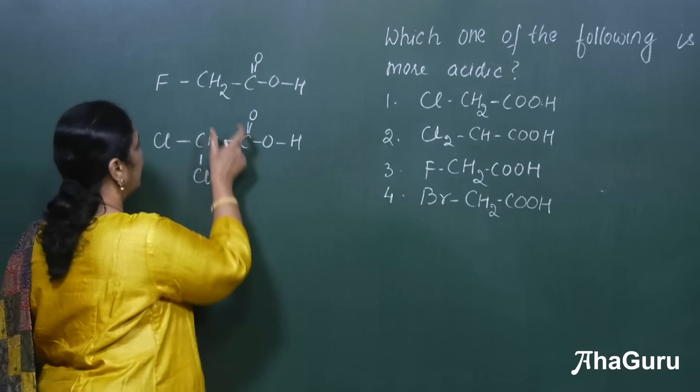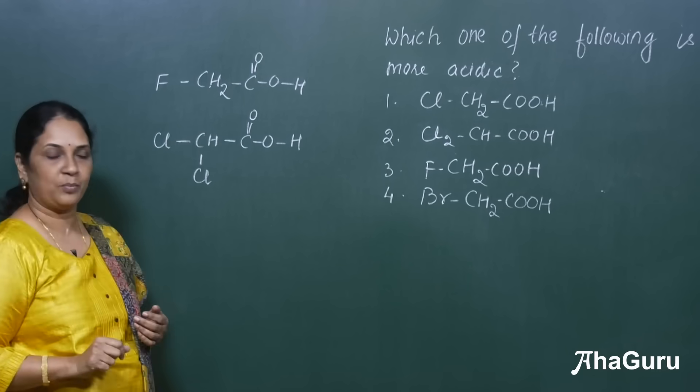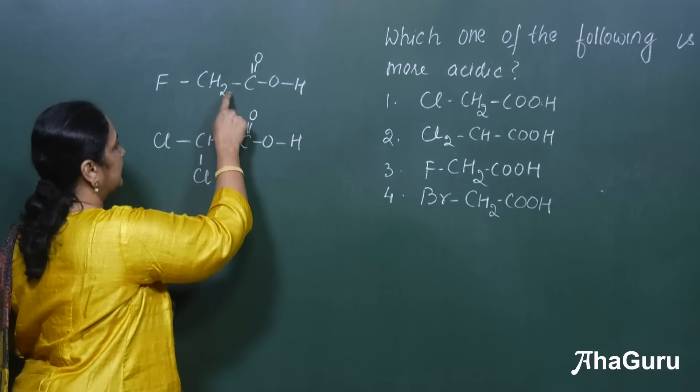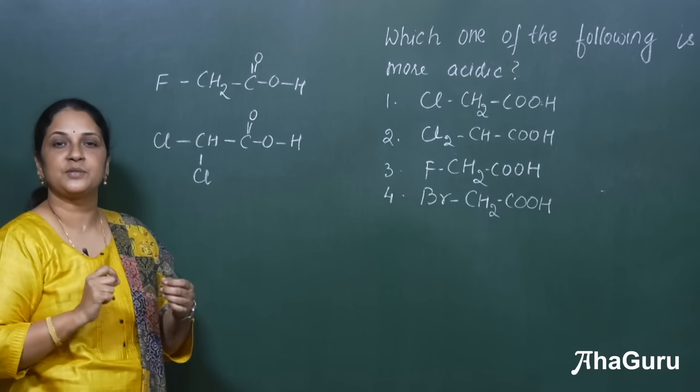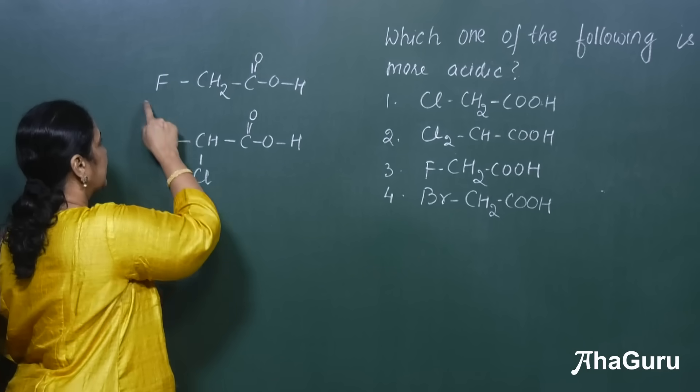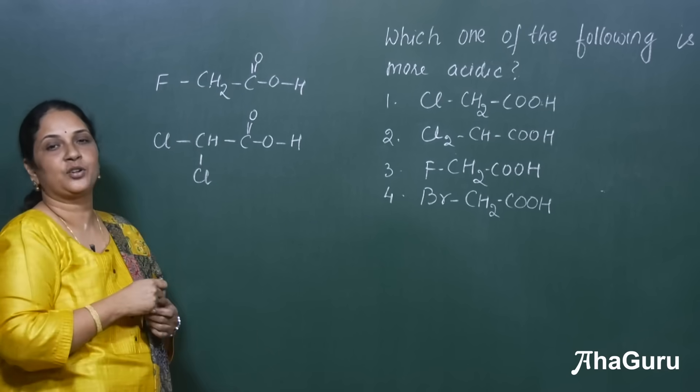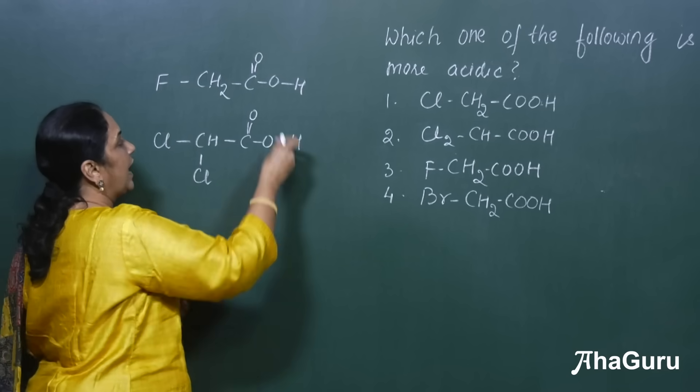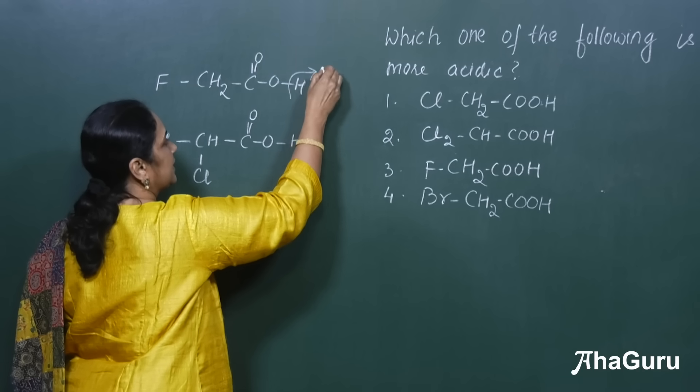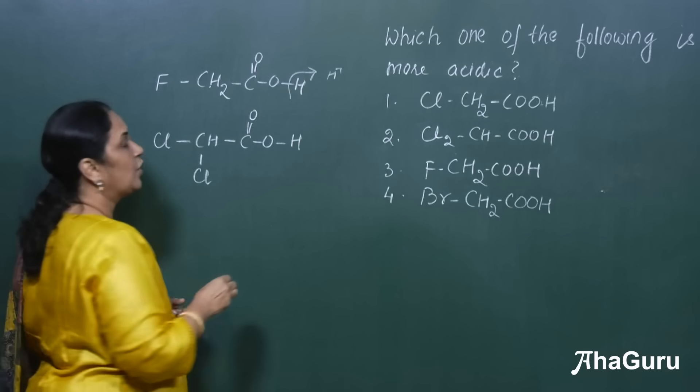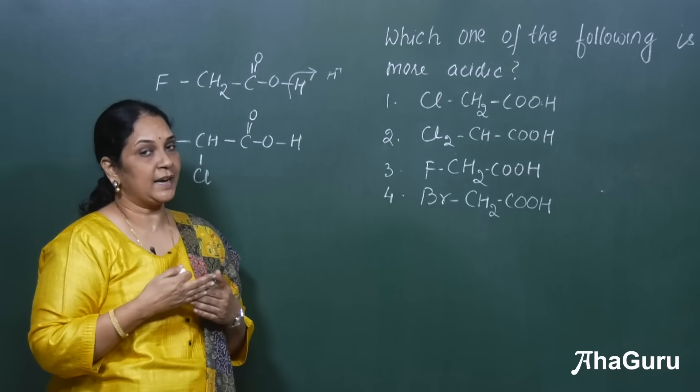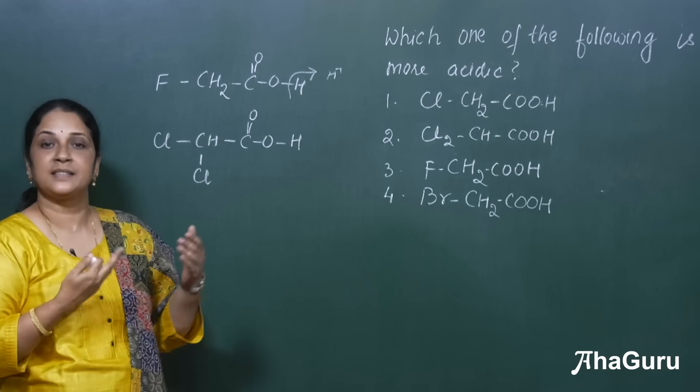So let me just explain with one example. I have taken this compound. Here this acid is attached to one fluorine which is more electronegative. So if it is attached to this group, this fluorine will pull the electron density towards itself and this hydrogen can be released easily as H plus. So now fluorine is more electronegative, so we can say that this is more acidic.